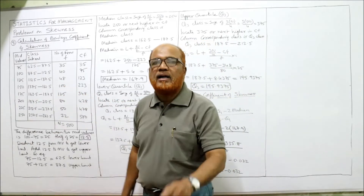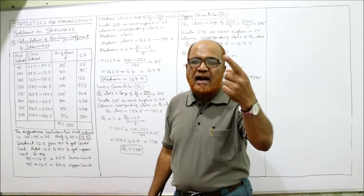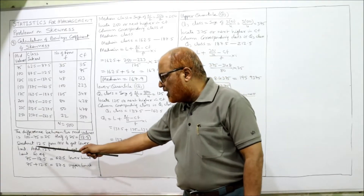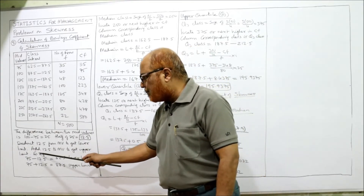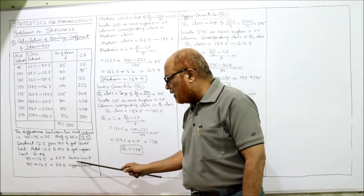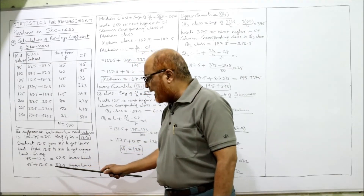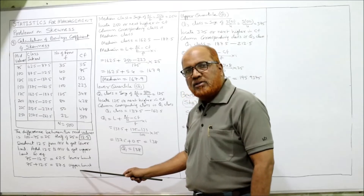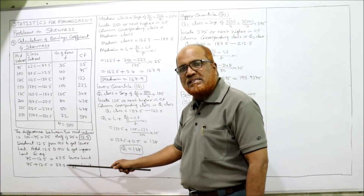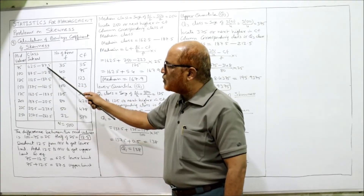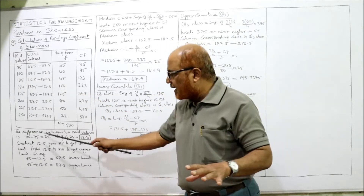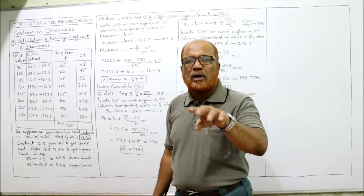Half of 25 is 12.5. To find the lower limit, deduct 12.5 from the mid value; to find the upper limit, add 12.5 to the mid value. For example, for mid value 75: lower limit = 75 − 12.5 = 62.5, and upper limit = 75 + 12.5 = 87.5, giving class interval 62.5 to 87.5.